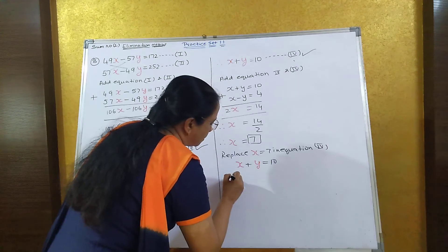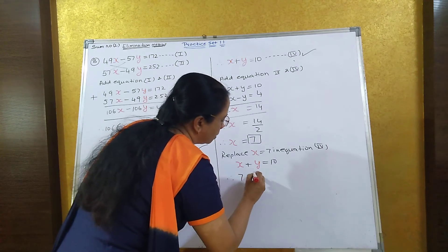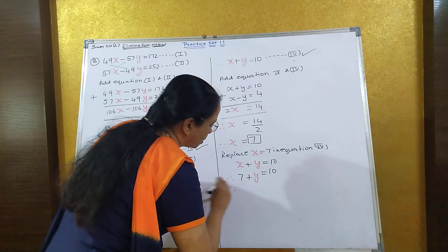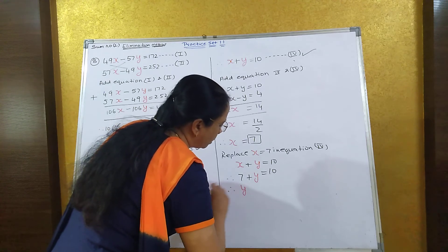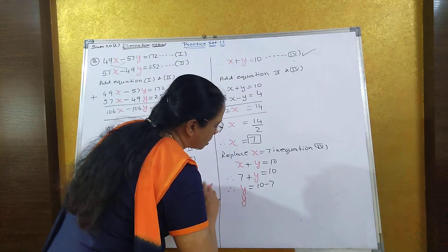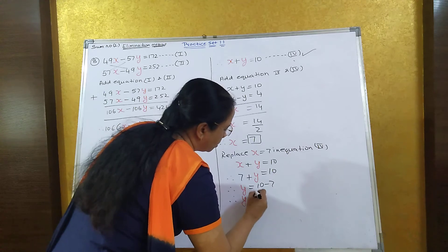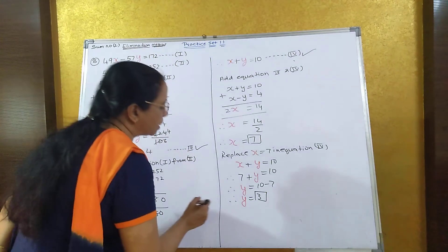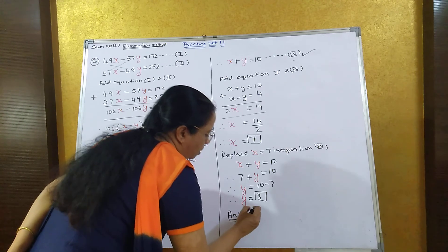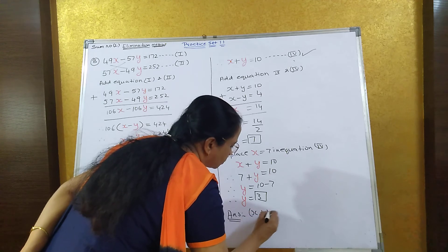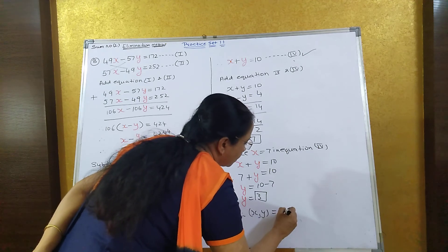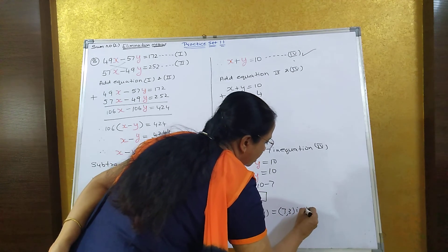Put the value of x: 7 plus y is equal to 10. Take the 7 to the other side. y is equal to 10 minus 7. So y is equal to 3. The value of y is 3 and the value of x is 7. So your answer is x = 7, y = 3, which is the solution.